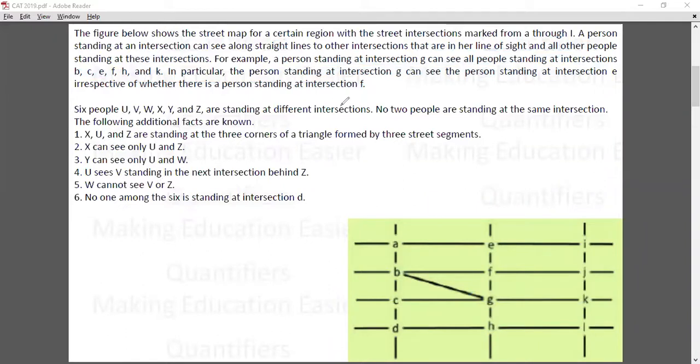The following additional facts are known: X, U, and Z are standing at the three corners of a triangle formed by three street segments. The corner concept - the triangle could be either BFG triangle or BCG triangle.